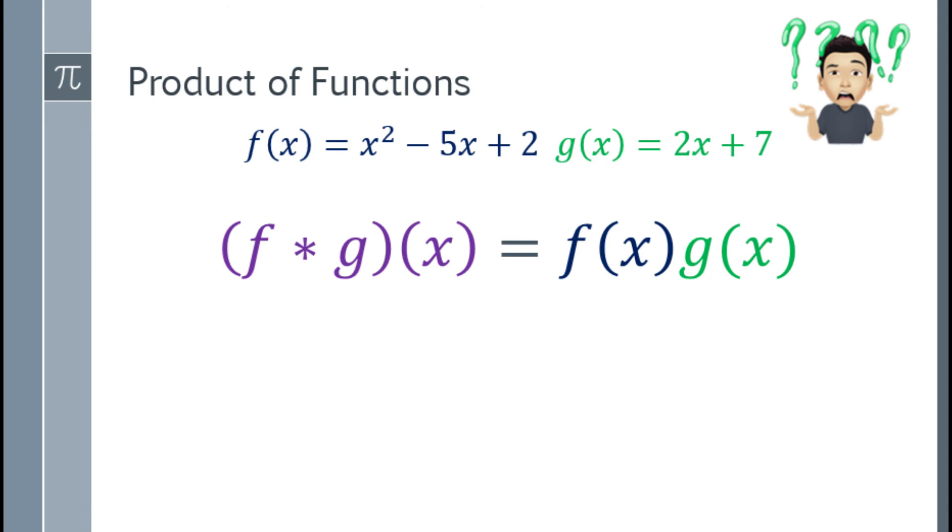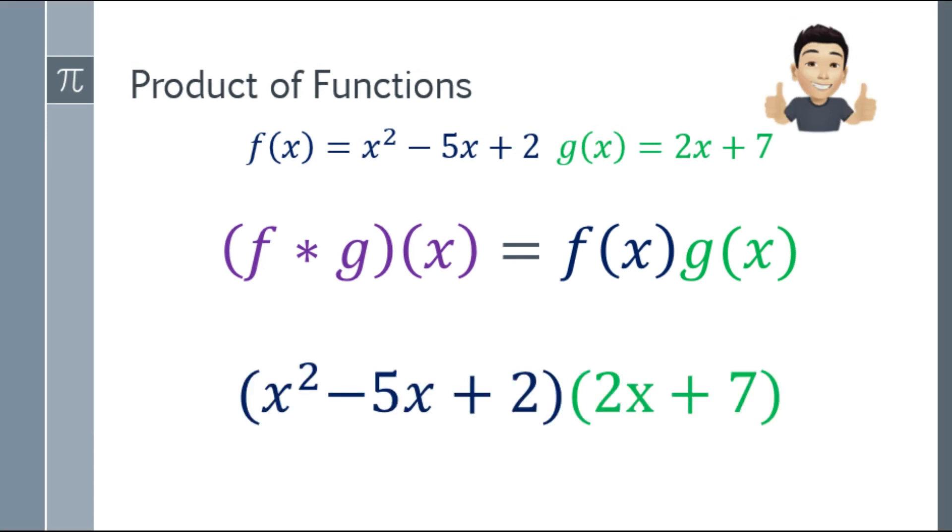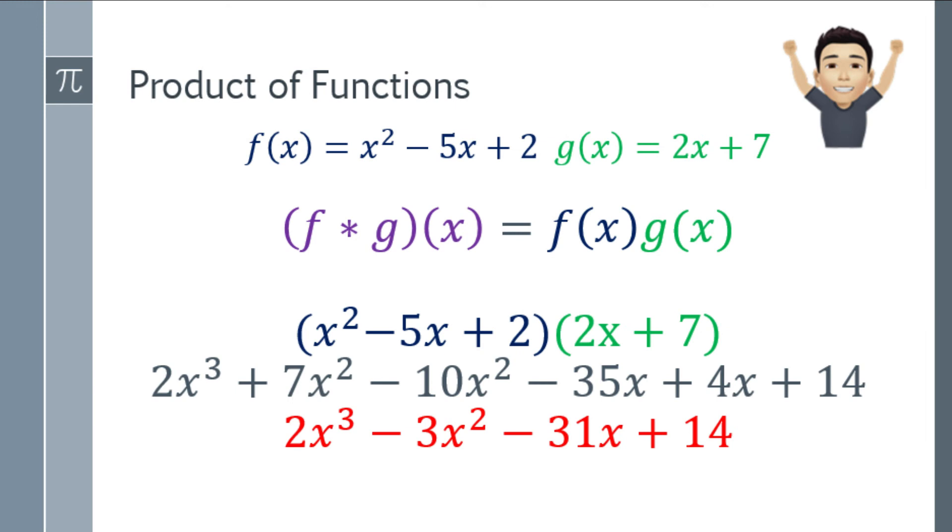Moving on din naman tayo sa product of functions. Sa product of functions, imumultiply lang natin yung dalawang functions. So same given tayo, yung x² - 5x + 2, yung quantity na yan, imumultiply lang natin sa quantity ng 2x + 7. So the correct answer will be 2x³ - 3x² - 31x + 14. And that's already the final answer.